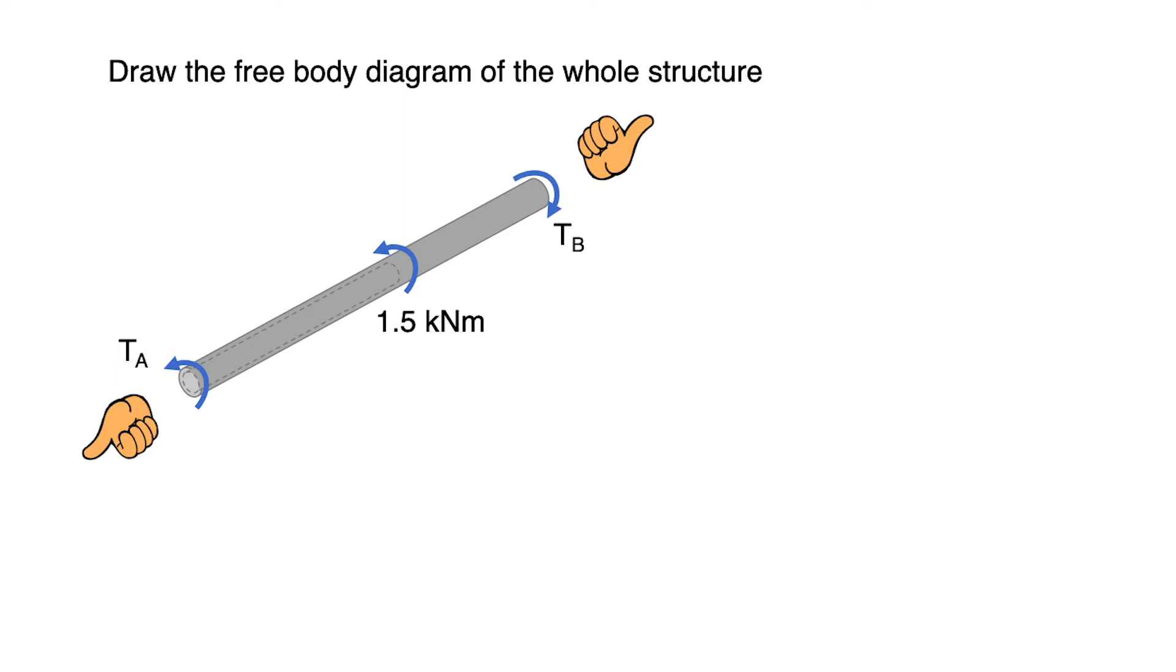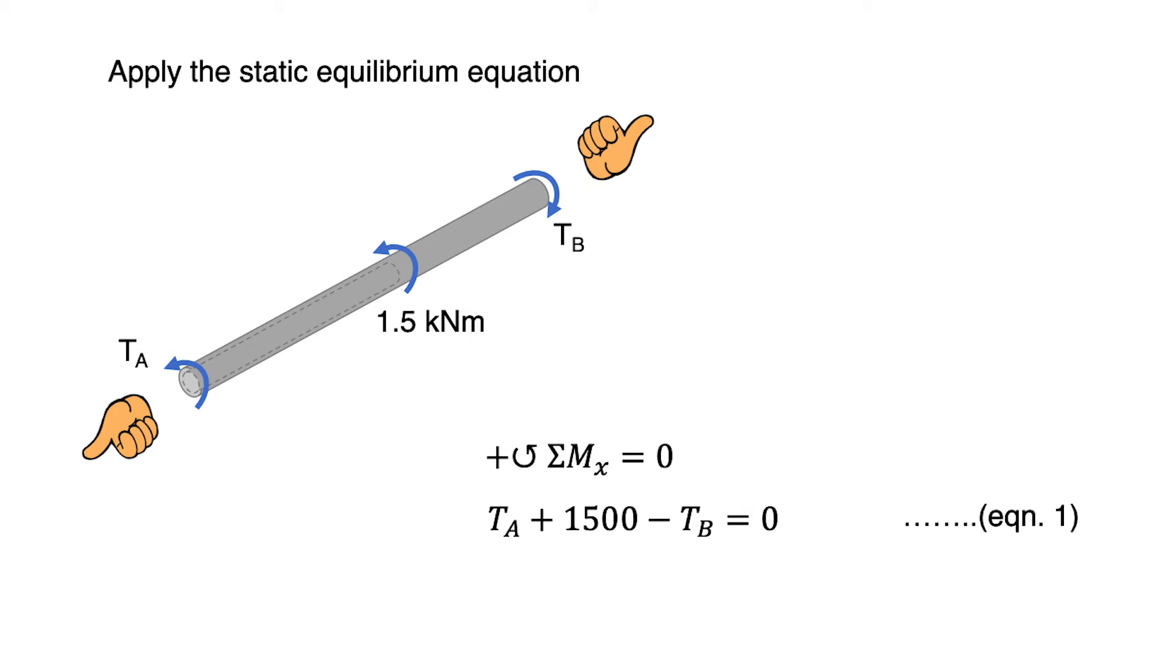Next we apply static equilibrium equation: summation of moment in x-axis equals to zero, and counterclockwise rotation is positive. Then we get TA + 1500 - TB = 0. This becomes equation 1.